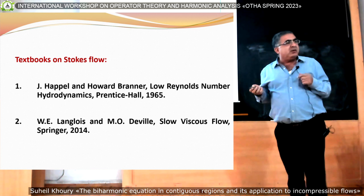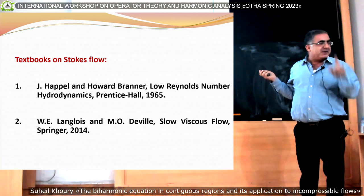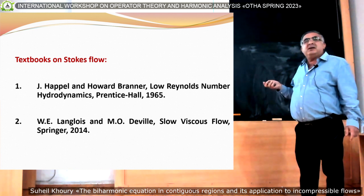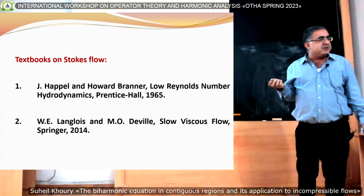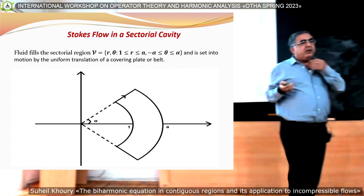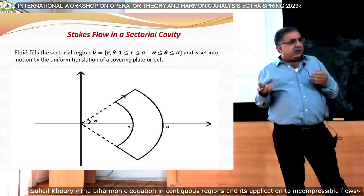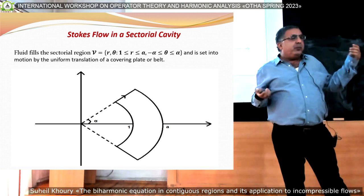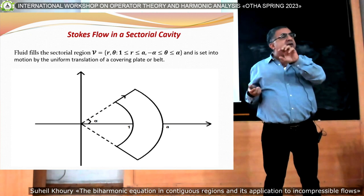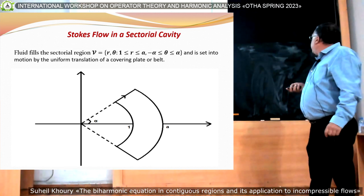There are many textbooks on Stokes flow. The classical ones include Happel and Brenner — the book is titled 'Low Reynolds Number' because R is small — or they call it hydrodynamics. There is Langlois and Deville, 'Slow Viscous Flow,' from 2014. Also a nice book on mathematical theory of fluid dynamics. Now we're going to try to solve the biharmonic equation. On simple regions it's no big deal — we can do it by separation of variables, eigenfunction expansion, in rectangular, polar, spherical, or toroidal coordinates.